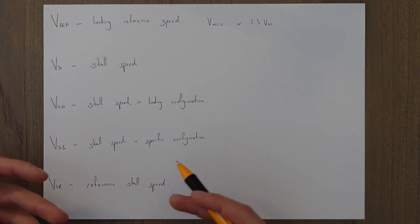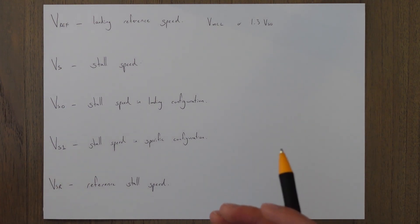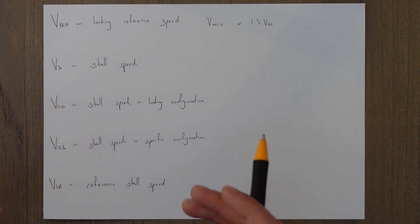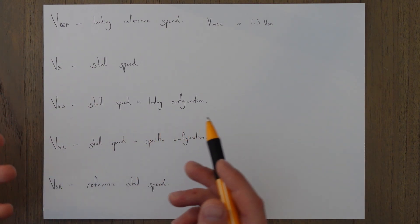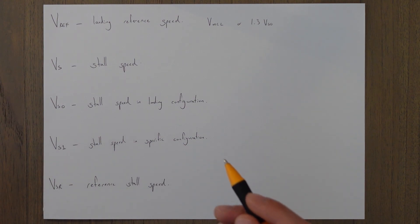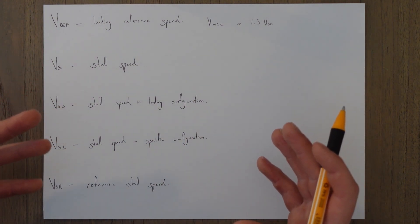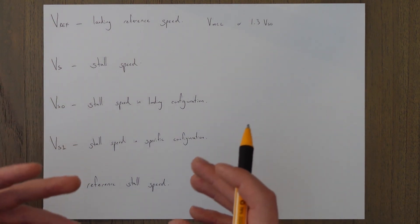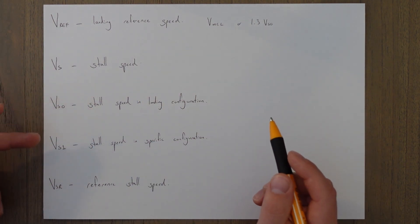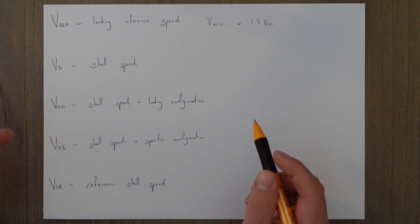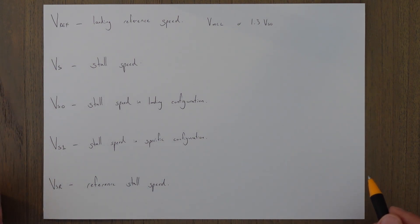VS1 is the stall speed or the minimum steady flight speed where the aircraft is still controllable within a specific configuration. This will be specified in the manuals or wherever the speed is written down and it could be in the takeoff configuration for example or it could be the climbing configuration. It could be whatever configuration they want to use but it will specify, and VS1 is just a reference for that. This could be VS2, VS3 if there's multiple reference speeds that they want you, if there's specific stalling speeds they want you to know.